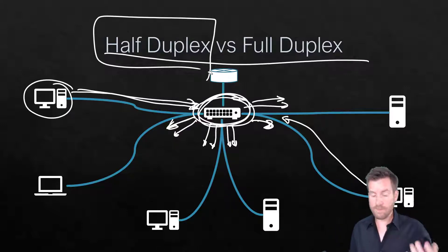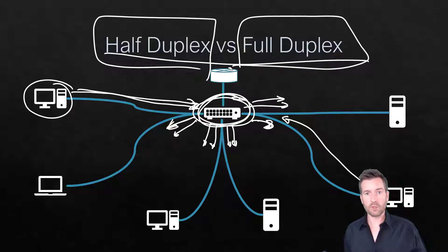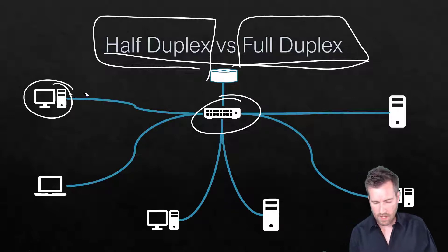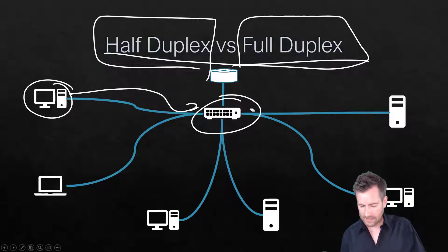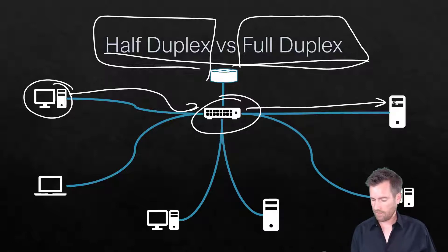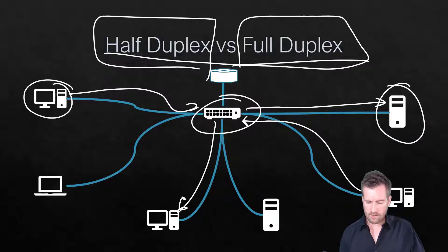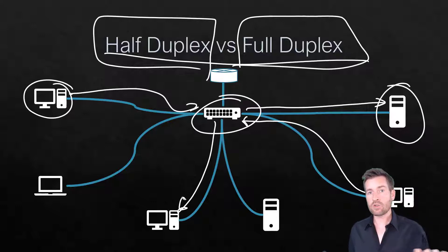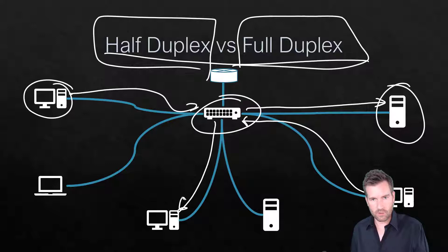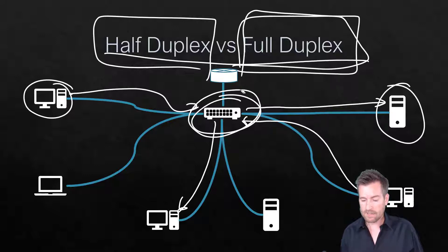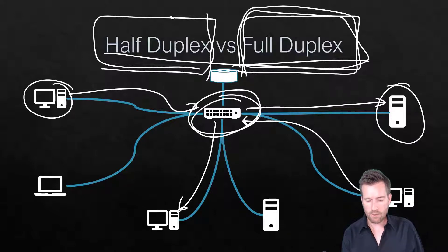We want a full duplex system where multiple devices can talk at the same time. To do that, we replace the hub with a switch. In a switch scenario, one computer can send a frame to the server while another device simultaneously sends to a different device. The switch is more intelligent about how it handles frames and where they're sent, facilitating full duplex communication. A switch operates in full duplex; a hub operates in half duplex.